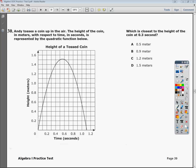They ask you, what is the height at 0.3 seconds? This is in height, and this is in seconds. So go to 0.3, which would be between 0.2 and 0.4. Go up, and as you can see, it's 1.2.